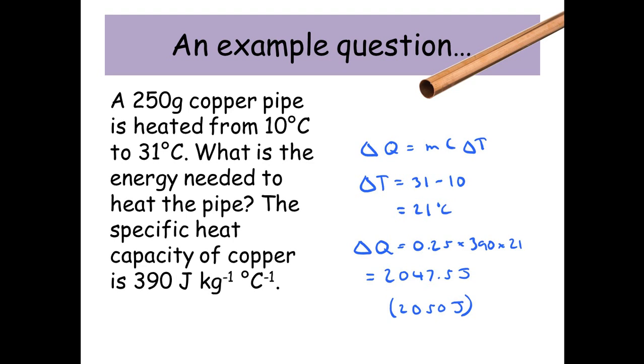That's our change in temperature. Now let's look at the rest of our equation. The mass needs to be in kilograms, but our value is given in grams. So 250 grams divided by 1000 gives us 0.25 kilograms. The specific heat capacity is 390, and our change in temperature is 21.